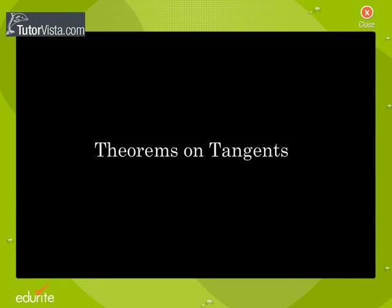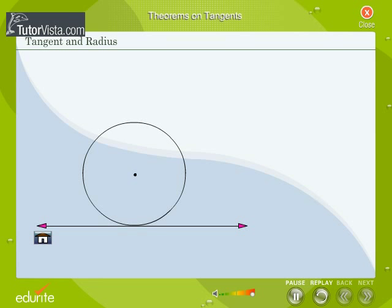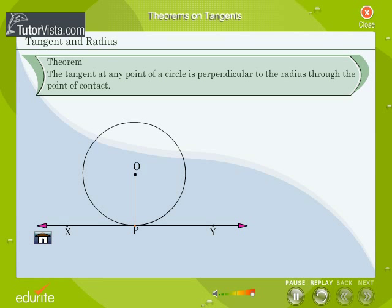Theorems on Tangents. Theorem: The tangent at any point of a circle is perpendicular to the radius through the point of contact.